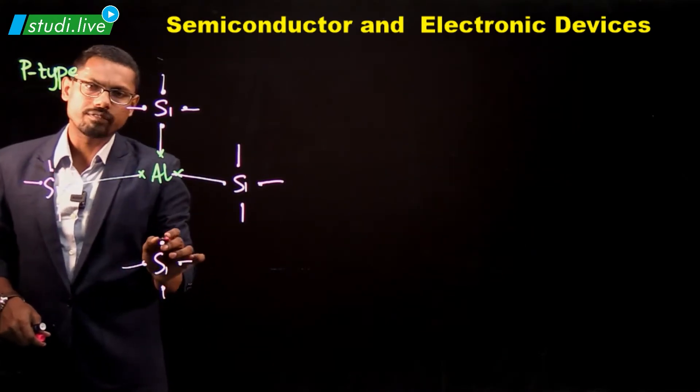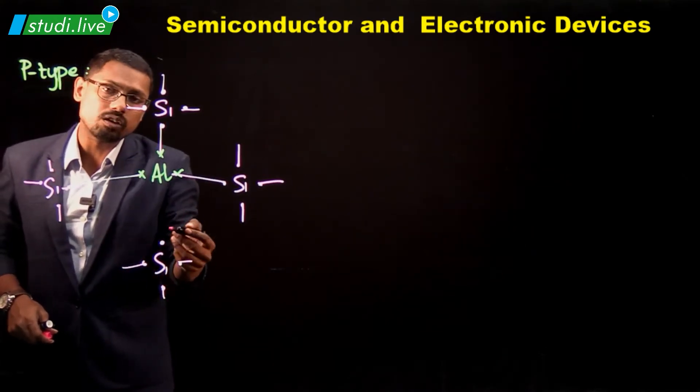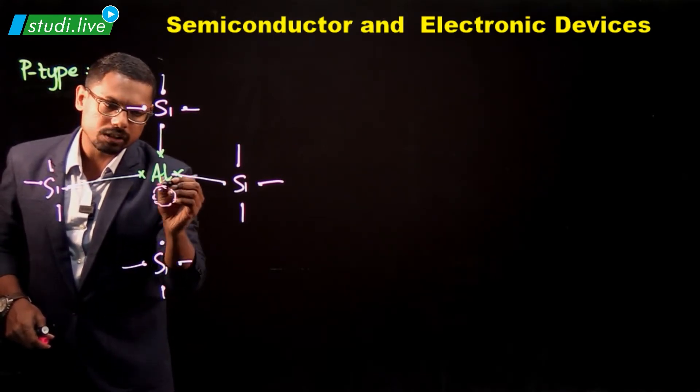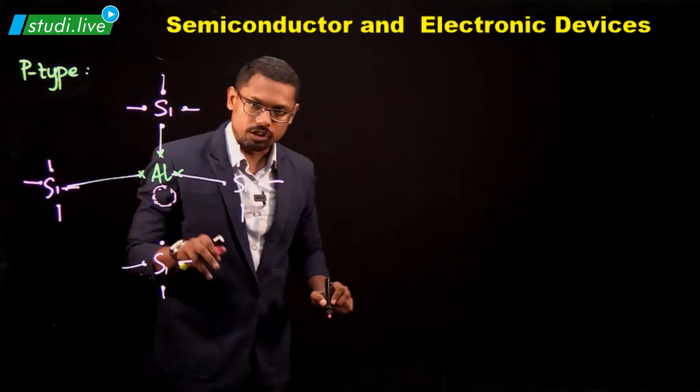But to this electron, there is no electron that is available. Aluminum doesn't have any electron over here. Aluminum does not have any electron over here. So this is a stranded electron.